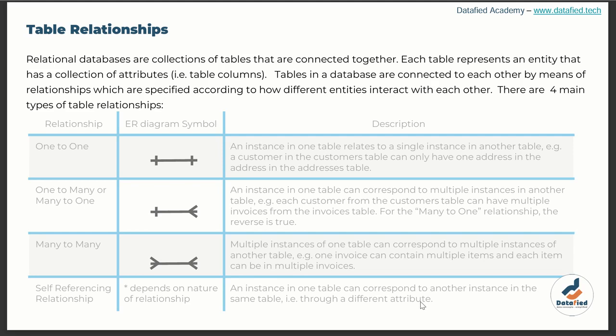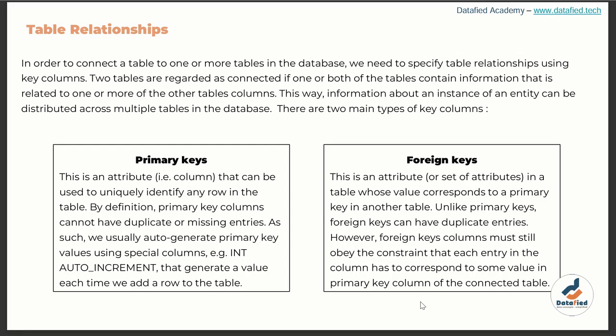Before we get to the Chinook database, let's talk about primary keys and foreign keys — a very important concept. In order to connect one or more tables in the database, we need specific relationships using what are referred to as key columns. Two tables are regarded as connected if one or both tables contain information that is related to one or more columns of the other table.